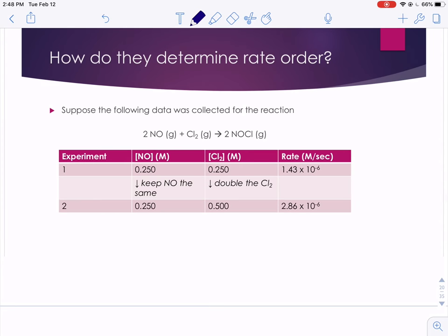So how do they figure out what those rate orders are? How do they know what the exponents are for a reaction? What they're going to do is they have to collect some data.